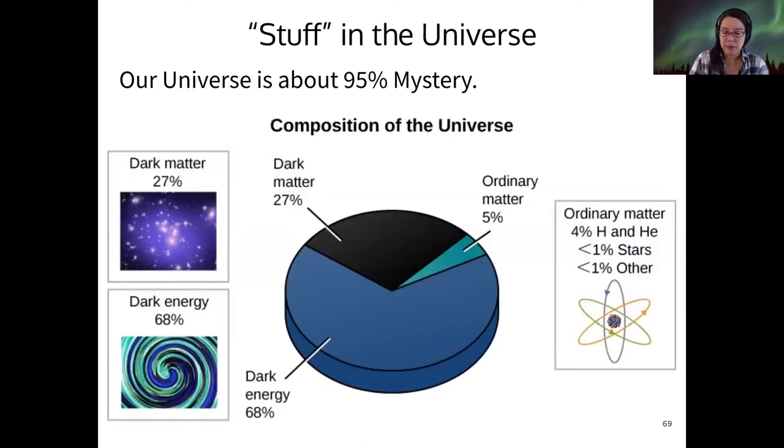In order to understand what happens in the universe, we need to know what's in it. Because as we mentioned, our models of universe expansion take into account the density of the universe. And so we need to know what it's made of. What is that density?